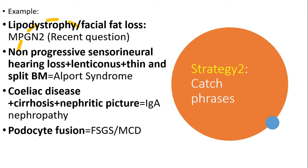My next important strategy is to identify catchphrases in the stem of your MRCP question. The RCP has favorite themes that keep recurring in their questions year after year. In order to save time, familiarize yourself with these catchphrases, and when you see them in your exam you will be able to quickly arrive at the correct answer. However, don't forget to read the question carefully — double check what is being asked before jumping to the answer.